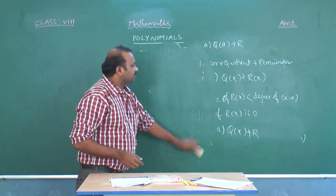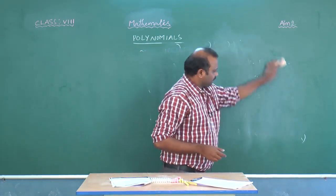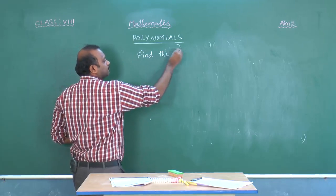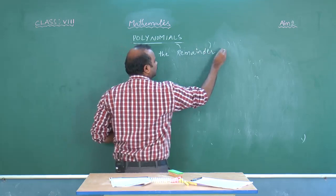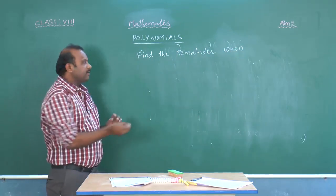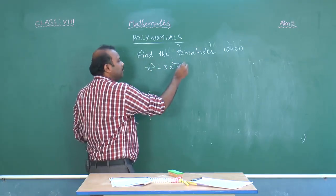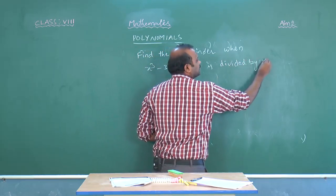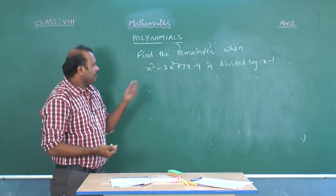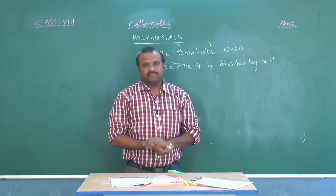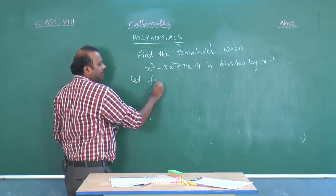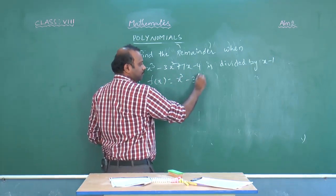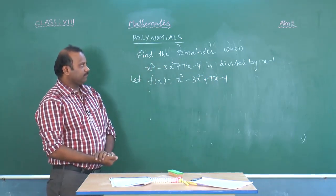Now we will see examples and applications of this Remainder Theorem. Find the remainder when x cubed minus 3x squared plus 7x minus 4 is divided by x minus 1. First, we take the given polynomial as f of x. So f of x equals x cubed minus 3x squared plus 7x minus 4.